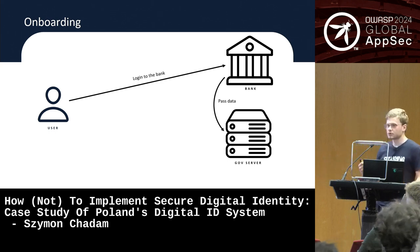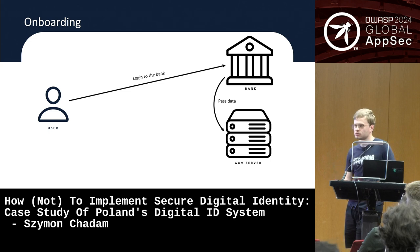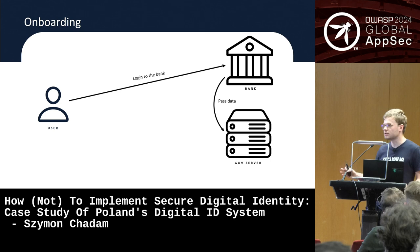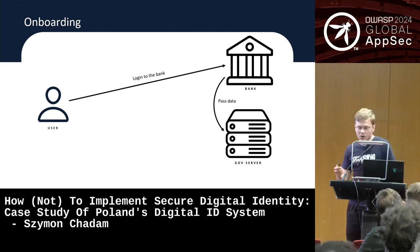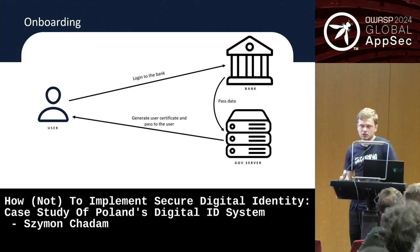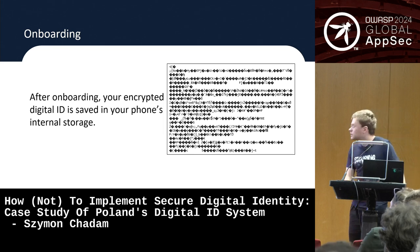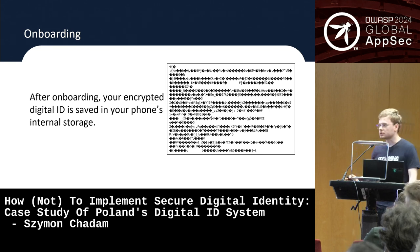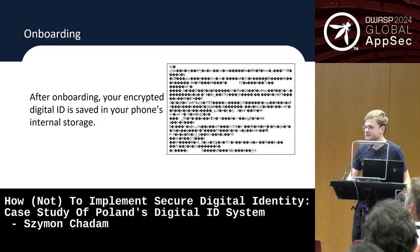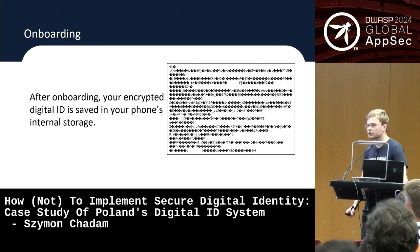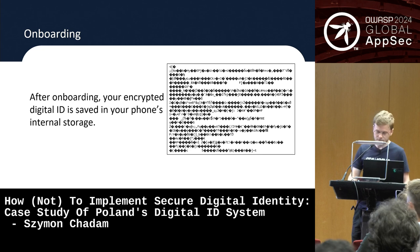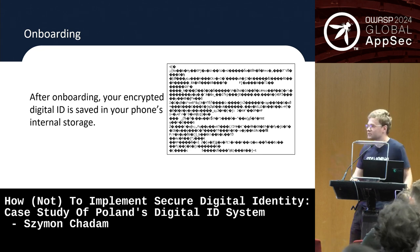The government receives the data from the bank in a separate channel not visible to you — the bank communicates with the government directly without you as an intermediary. Once the government has your data, it generates a user certificate and a container of your data containing all your details — your name, photo, social security number, and so on. The data is then stored locally on your device, encrypted with a key stored in a so-called secure element within your phone, so it's not accessible even if someone steals your phone.